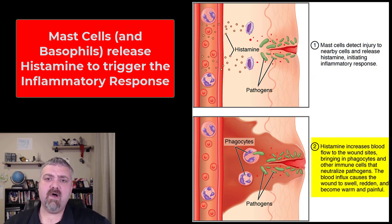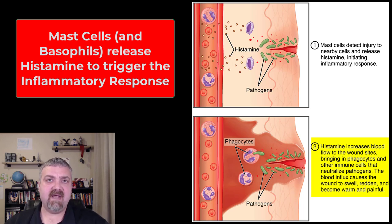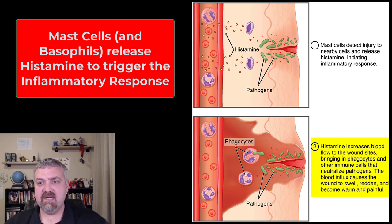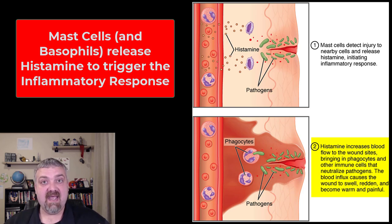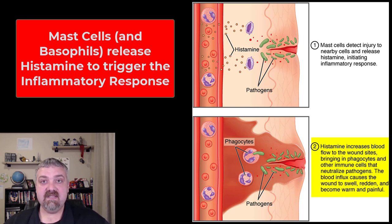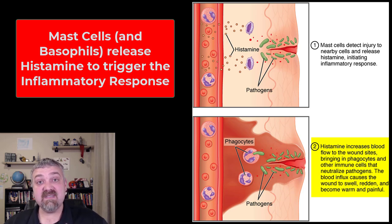Other cells are involved, not just mast cells. Neutrophils can come in, especially if there's a bad bacterial infection. They will come in and engulf the bacteria — they eat so many of them that they die. Neutrophils and all the contents of these dead cells is actually what causes the pus at the site of an infection.